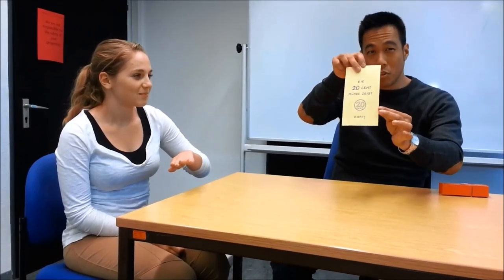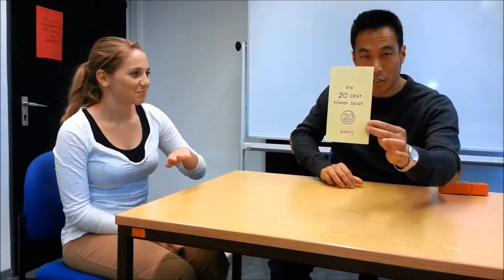Heads. So you're saying the twenty-cent coin is showing heads, correct? Yes? Yes. In German, die zwanzig Cent Münze zeigt den Kopf. Yes? Yes. It's interesting. Isn't that scary? That on this paper I wrote, die zwanzig Cent Münze zeigt den Kopf.